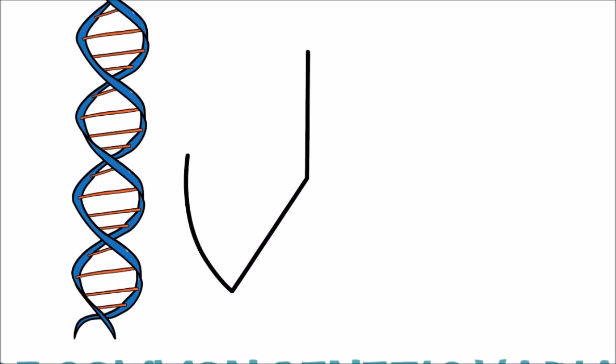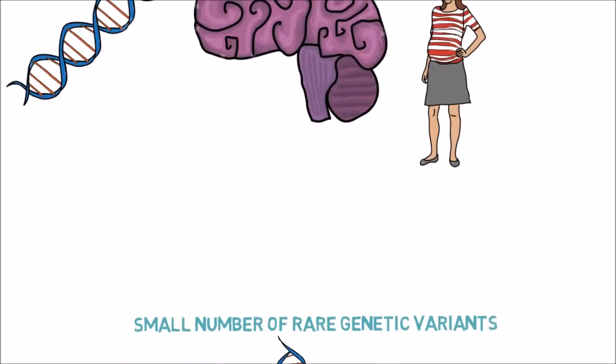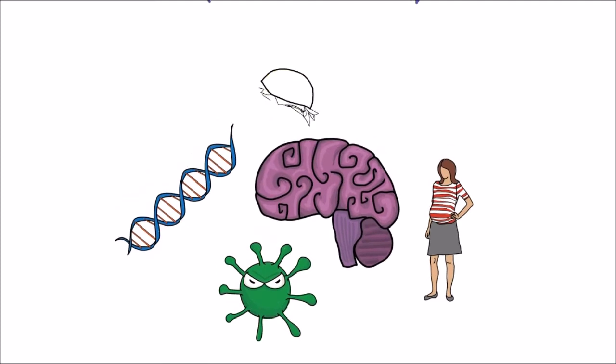But genetics only make up one part of the picture, and the puzzle is a little bit more complicated than that. These high-risk and low-risk genes can interact with a range of environmental factors that can affect brain development and increase the likelihood of schizophrenia.